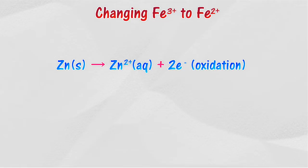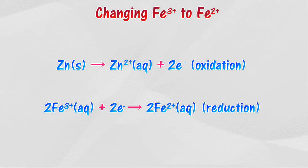Reducing agents can be used in the changing of ferrum 3 ions to ferrum 2 ions. In this reaction, ferrum 3 ion oxidizes zinc to zinc ion. At the same time, zinc reduces ferrum 3 ion to ferrum 2 ion.